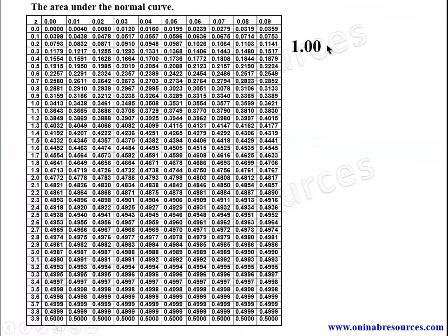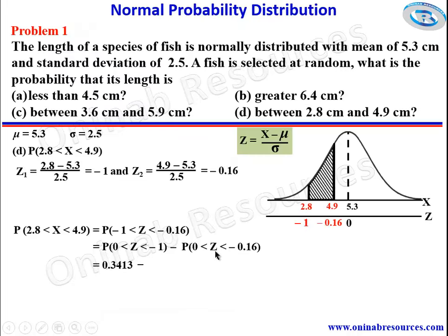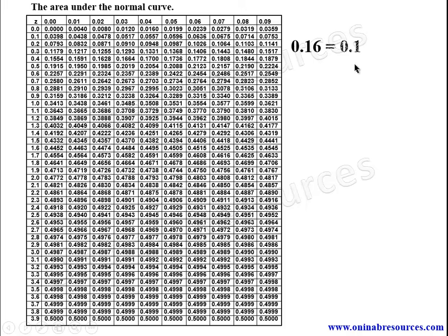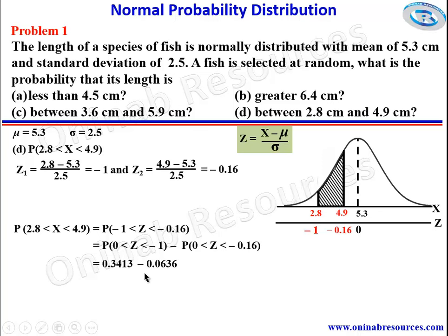Looking up the table for 1: that's 1.0 and 0.00; intersection is 0.3413. Then for 0.16: that's 0.1 plus 0.06; intersection is 0.0636. Subtracting: 0.3413 − 0.0636 = 0.2777. As a percentage, that is 27.77%, representing the probability that a randomly selected fish has a length between 2.8 cm and 4.9 cm. That's the end of problem one.